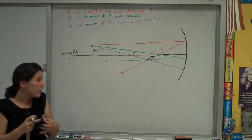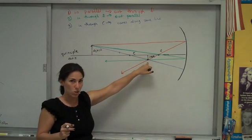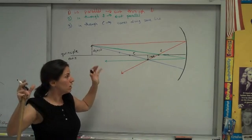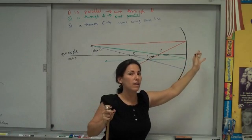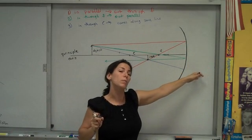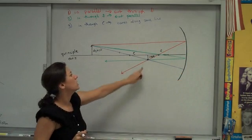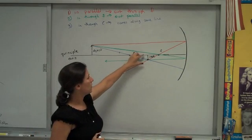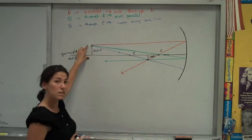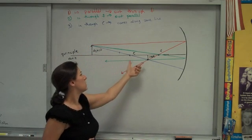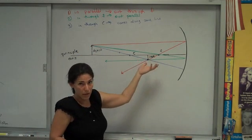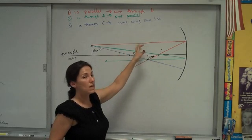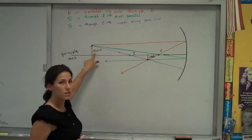All the light met in this place, so that's what we call a real image. If all the light diverged and your eyeballs had to extend that reflected light behind the mirror to see where it appeared to come from, that'd be a virtual image. This is a real image. And in terms of image characteristics, I can see that my image is smaller than my object in this case, that my image is located between c and f in this case, and then my image is inverted, upside down, relative to the object.